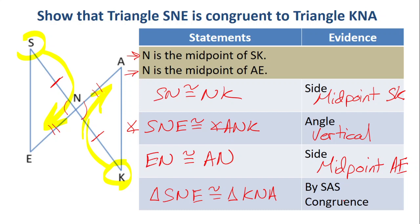So this means that triangle SNE is congruent to triangle KNA by side angle side. Questions on this? Pretty straightforward. All right.